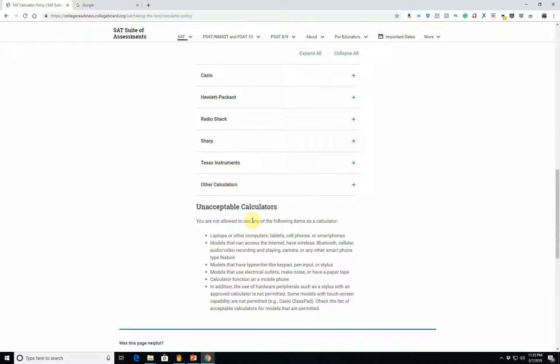Most graphing calculators. See the chart. Okay. These brands all pass the test. Okay. Can't bring a laptop. Can't bring anything that can access the internet. Anything that has a typewriter like keypad, pen input, or stylus. Anything that uses electrical outlets, makes noise, or have a paper tape calculator function on a mobile phone. Obviously anything that's going to let you communicate with anybody outside the room is no good. And I guess electrical outlets, you know, paper tape. That's just going to be a distraction and probably just a pain. So they don't want you to use that.